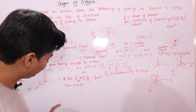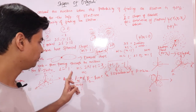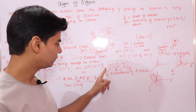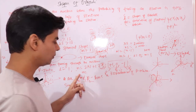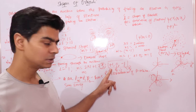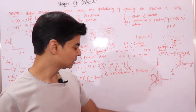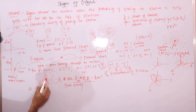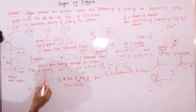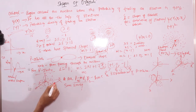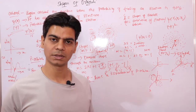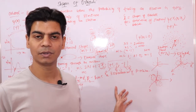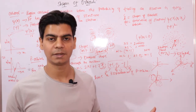P orbitals have 3 orientations because the magnetic quantum number M is 3 for P orbitals. One orientation is towards the X axis, another along the Y axis, and the third along the Z axis. These 3 orientations all have equal energy, which is why we call them degenerate orbitals.